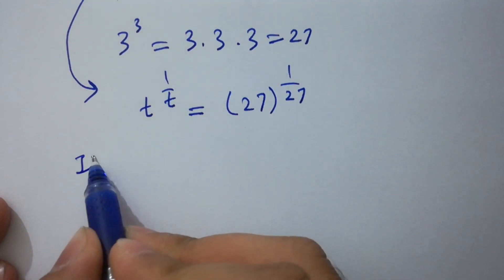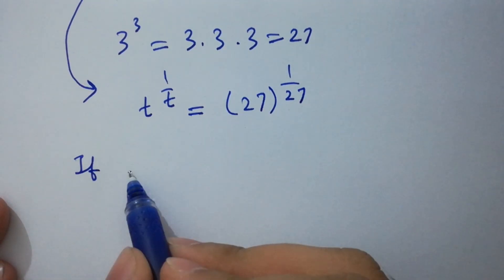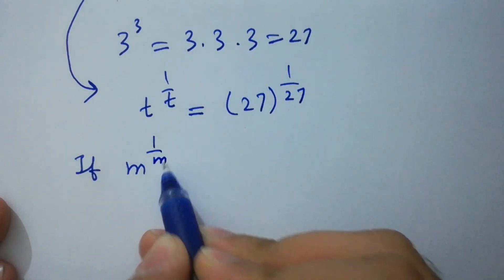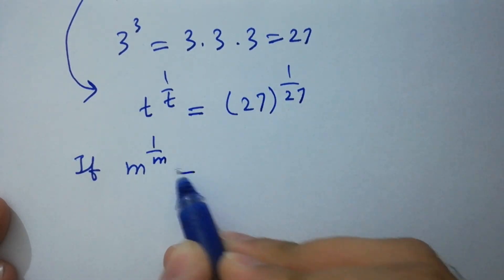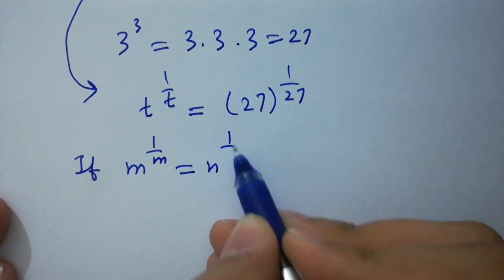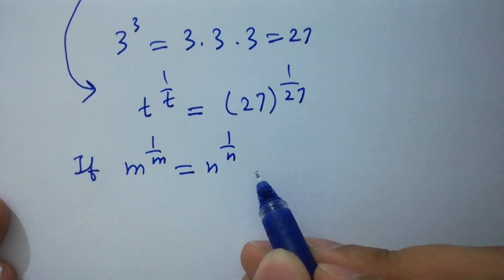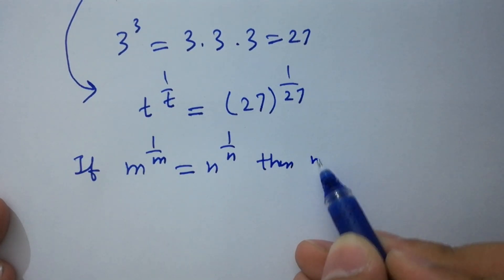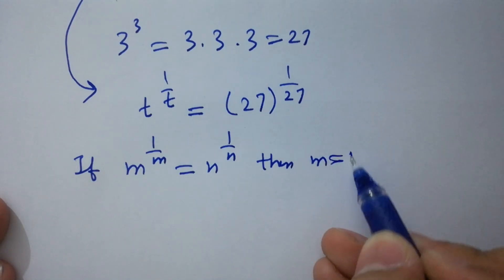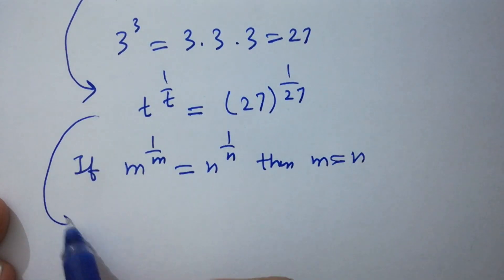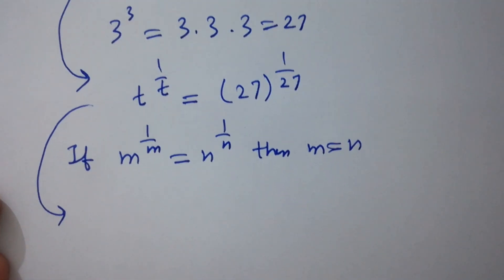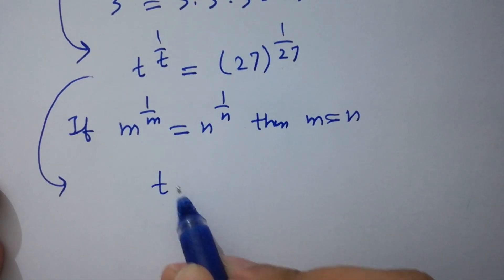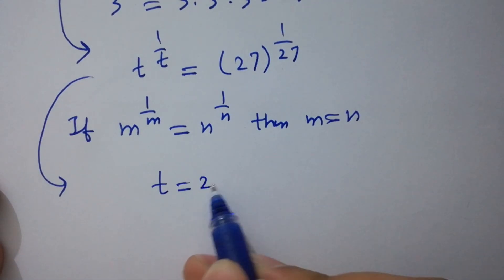So if m to the power 1 over m equals n to the power 1 over n, then m equals n. So we have the value of t which is 27.